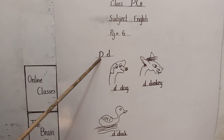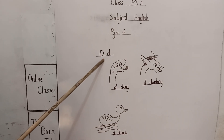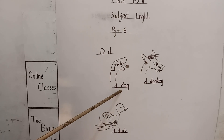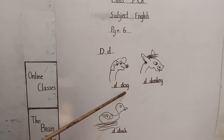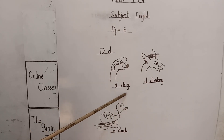This letter is D. What is this letter? D. D for dog. D-O-G, dog. D for dog.